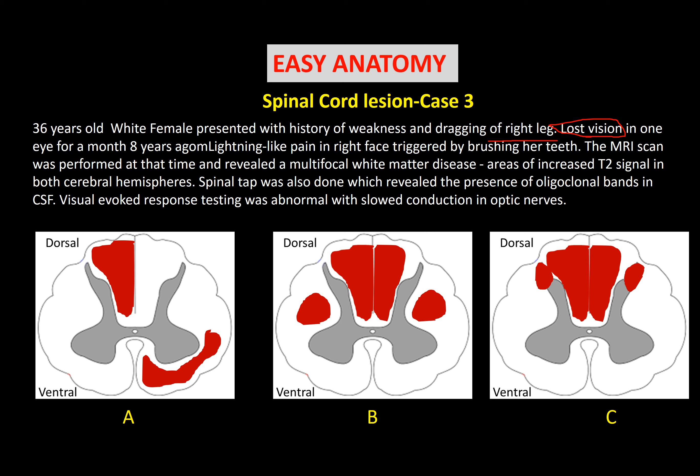She had lost vision in one eye for a month, eight years ago, and lightning-like pain in the right face triggered by brushing her teeth. An MRI scan was performed at that time and revealed multifocal white matter disease — areas of increased T2 signal in both cerebral hemispheres. A spinal tap was also done which revealed the presence of oligoclonal bands in the cerebrospinal fluid.